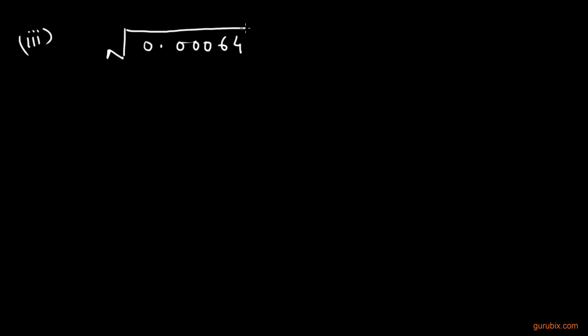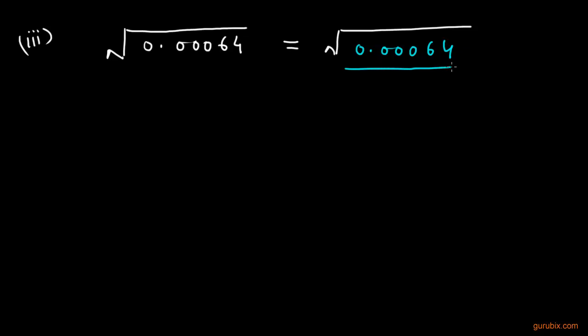In part 3 we are given the number 0.00064 and we have to find its square root. We remove the decimal point by writing it as a fraction with powers of ten in the denominator: 64 / 100000. There are 5 digits in the decimal part, so we place 5 zeros and remove the decimal point.